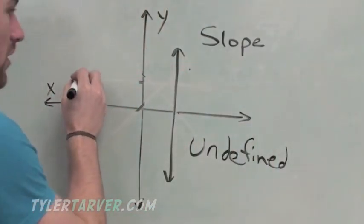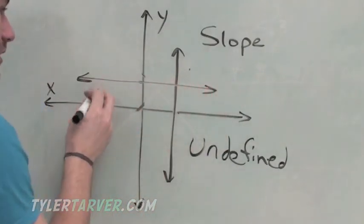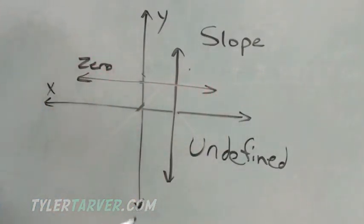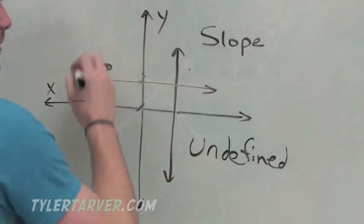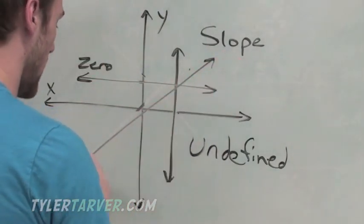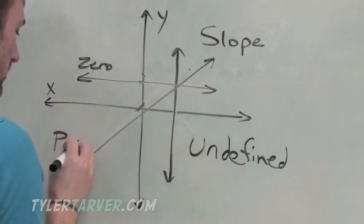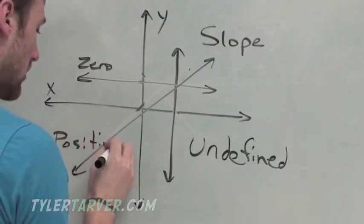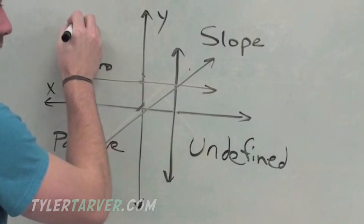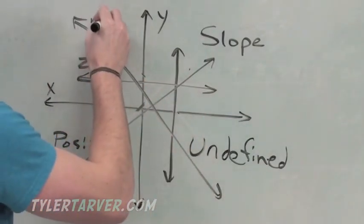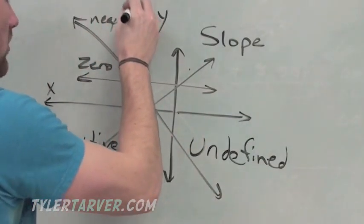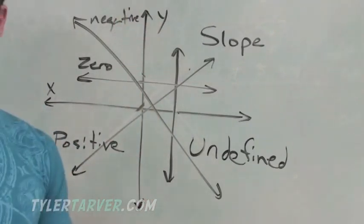Straight across is zero slope. That means you've got a straight line across, horizontal. Going up from left to right is positive slope. And going down is negative. Boom shakalaka.